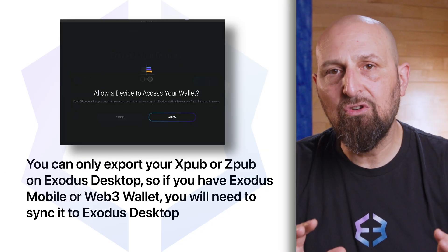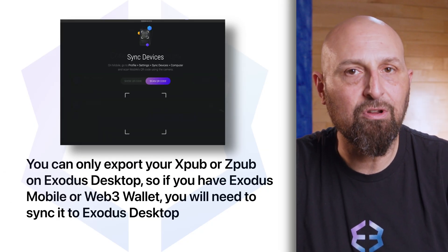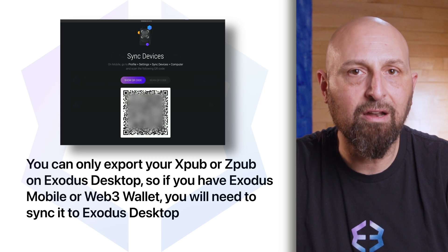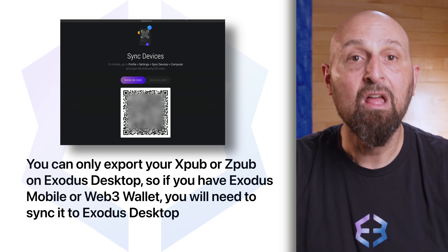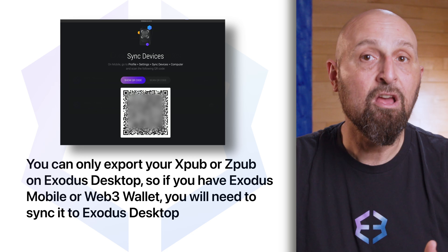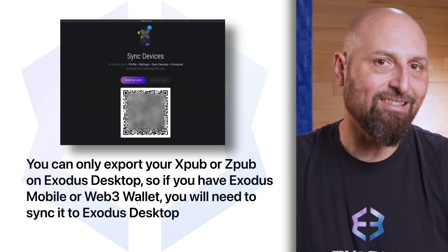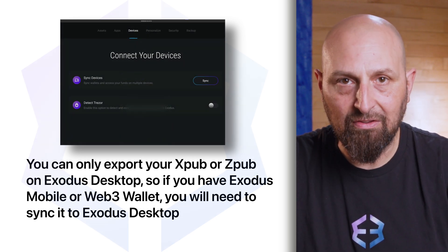Now, how do you export your XPUB or ZPUB in your Exodus wallet? It's important to know that you can only export your XPUB or ZPUB on Exodus Desktop. So, if you have an Exodus Mobile or Web3 wallet, you'll need to sync it to Exodus Desktop first in order to do this.